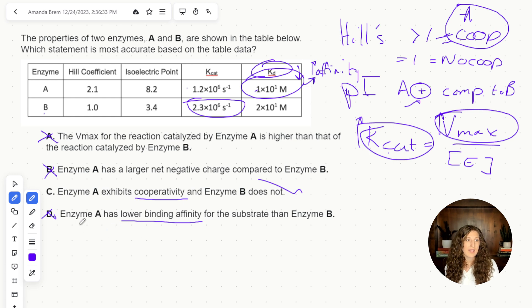So sometimes it's good to be like, okay, enzyme A, lower binding affinity, that would mean higher KD. And that's not what we see here. So that's also a good notation to do is rewrite the answer choice in terms of the table to make it easier to understand. So we're left with C. C is our answer here.